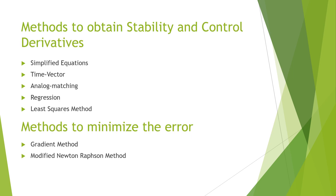There are 5 methods which can be used to obtain the stability and control derivatives: simplified equations, time vector algebra, analog matching, regression, and the least squares method. Among these, simplified equations, time vector, analog matching, and regression methods have been used most extensively. The simplified equations and time vector methods are often severely limited because the set of aerodynamic coefficients obtainable is incomplete and the types of applicable responses are restricted. The analog matching method is also limited because estimates resulting from it vary with the skill and technique of the operator.